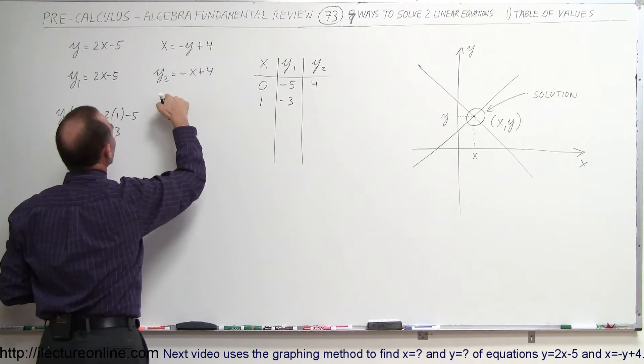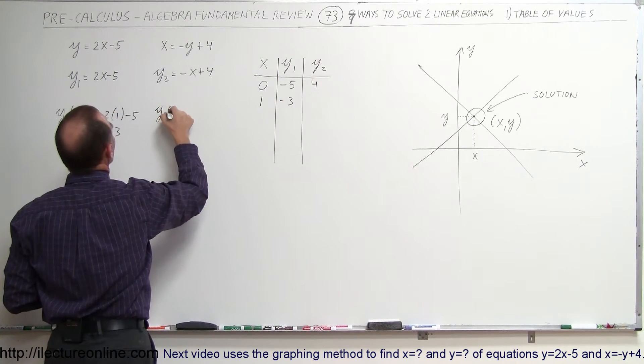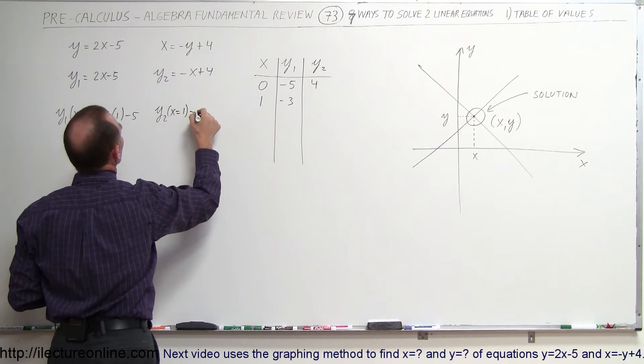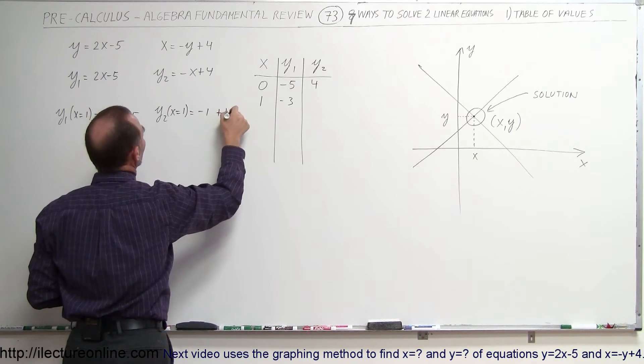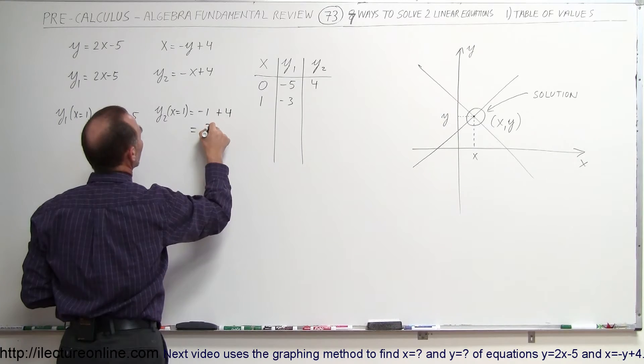and y2, when x is equal to 1, is equal to minus 1 plus 4, and so that would be equal to 3.